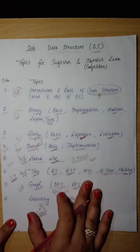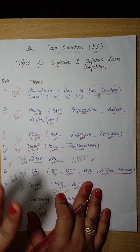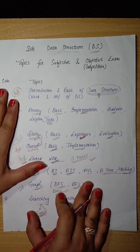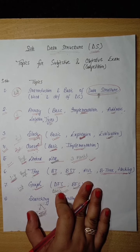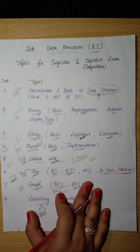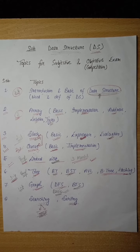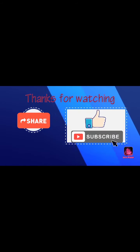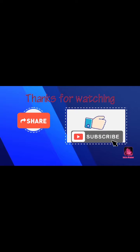These are the topics we want to cover in this whole series. From subjective point of view, all the topics are important because they are unit-wise divided. But from competition and objective point of view, mark's division from objective point of view I have described you here. So the next series will come in detail. I hope you all like this video. Please share and like this video and subscribe to my channel. Thank you.